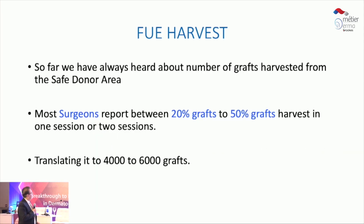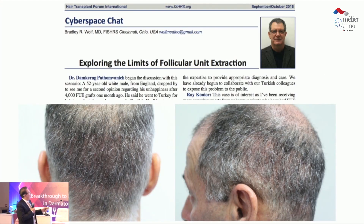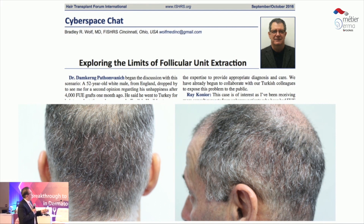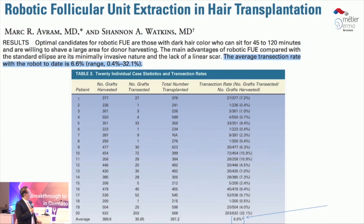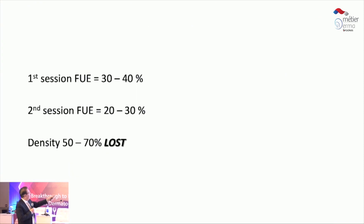Over-harvesting is what you do not want for your patients. In my personal study, I found that most surgeons would take about 20 to 50 grafts per session estimate, but our study showed that every surgeon actually takes 50 to 70% of the available harvest if not careful. Bradley Wolf explored the limits of follicular extraction. Our study showed that maximum reduction in one session is 38%, and if you do two sessions including transaction rate, you are removing 50 to 70% of the hair, meaning the donor area becomes too depleted.